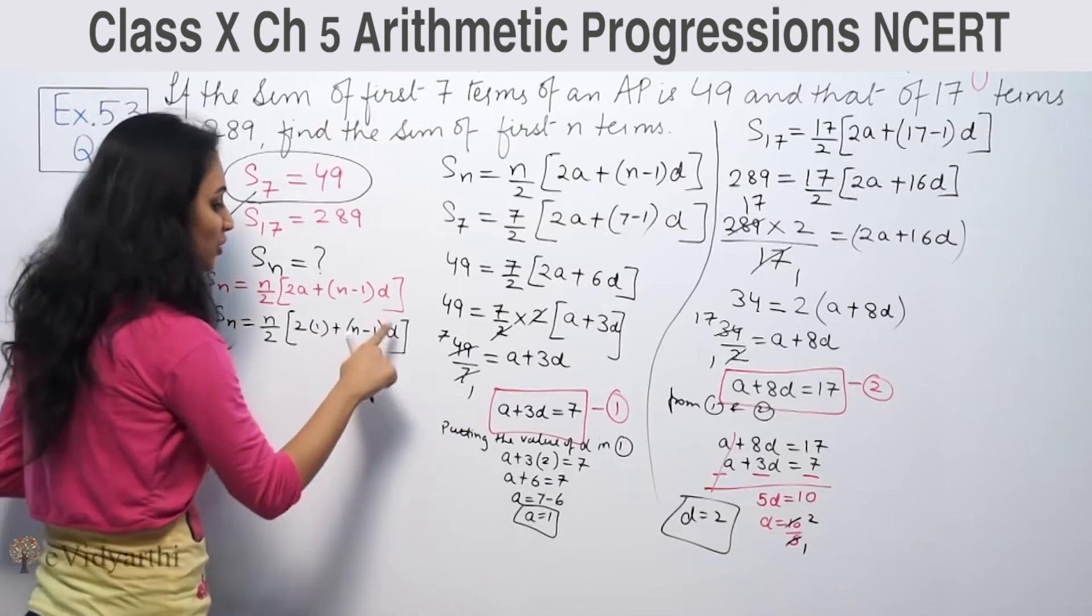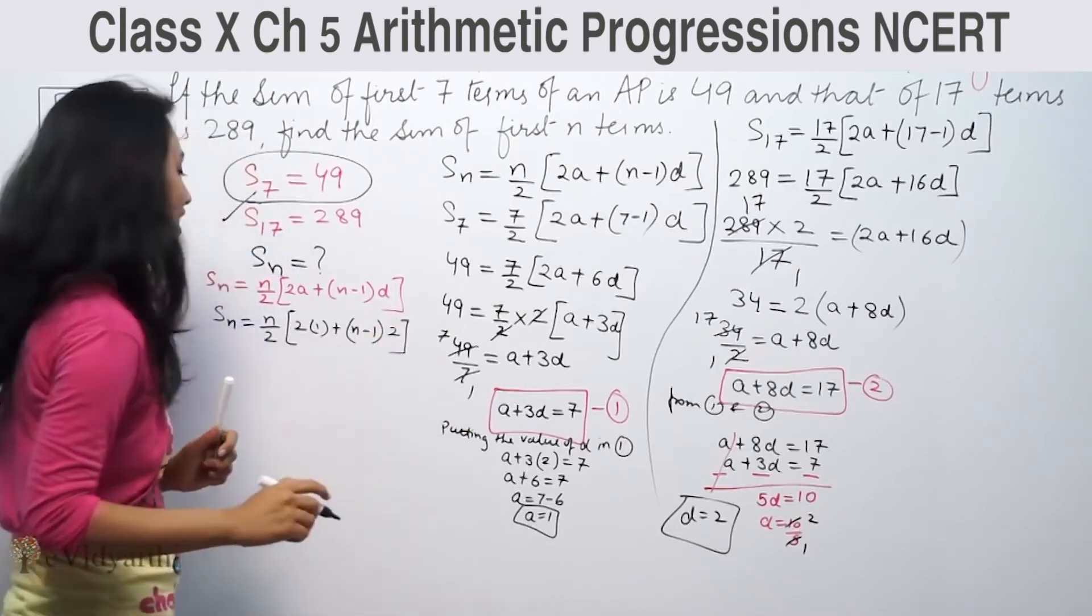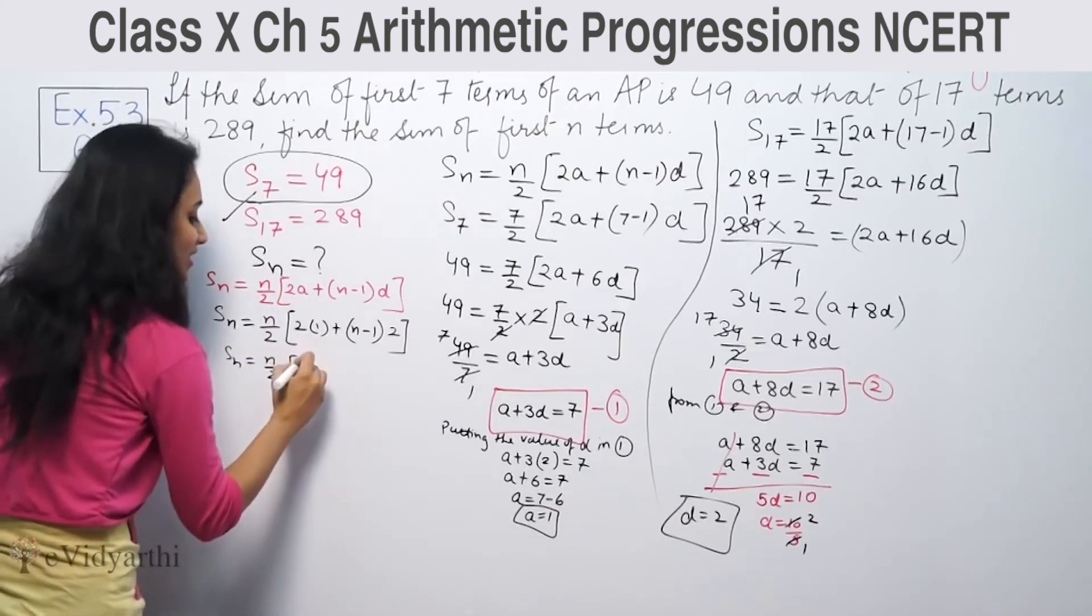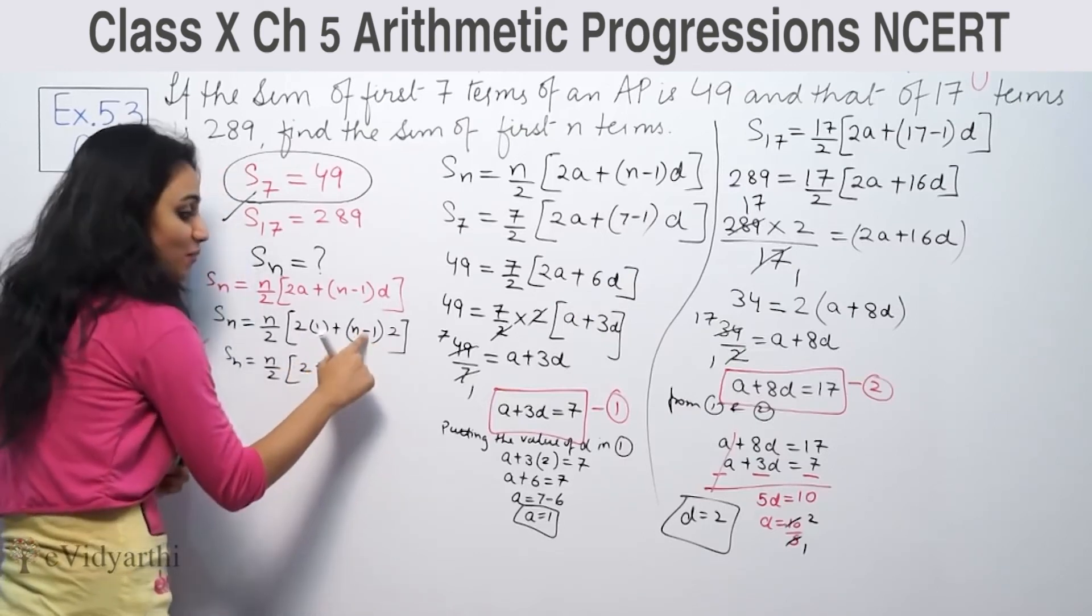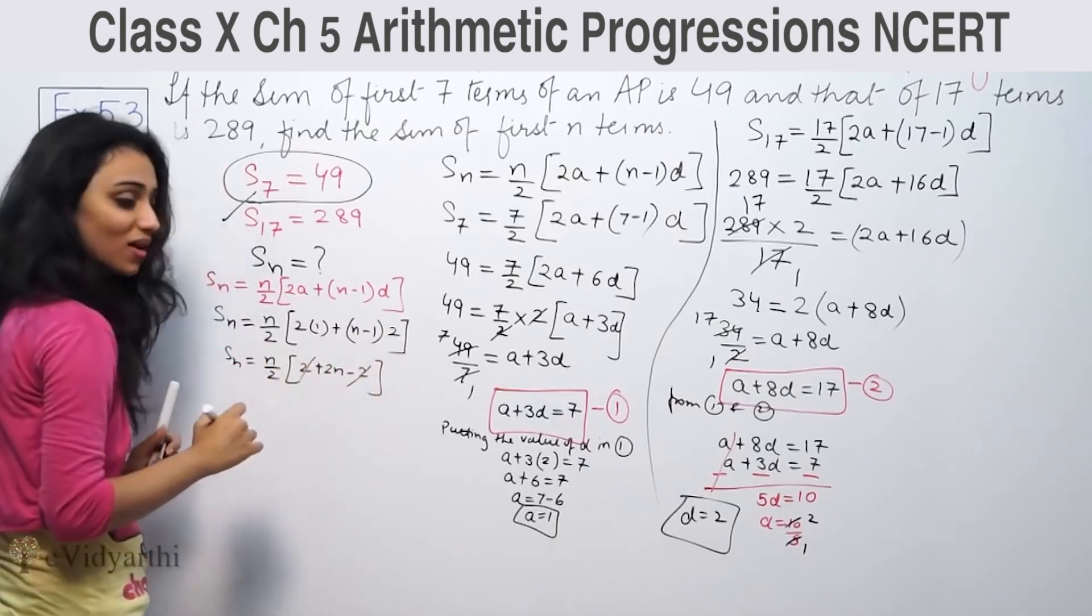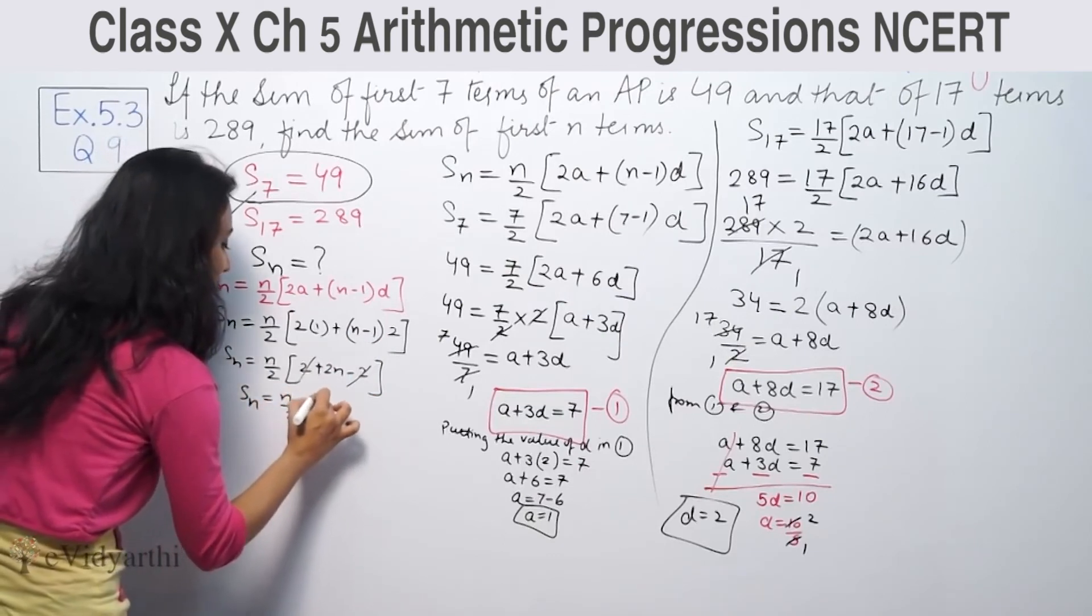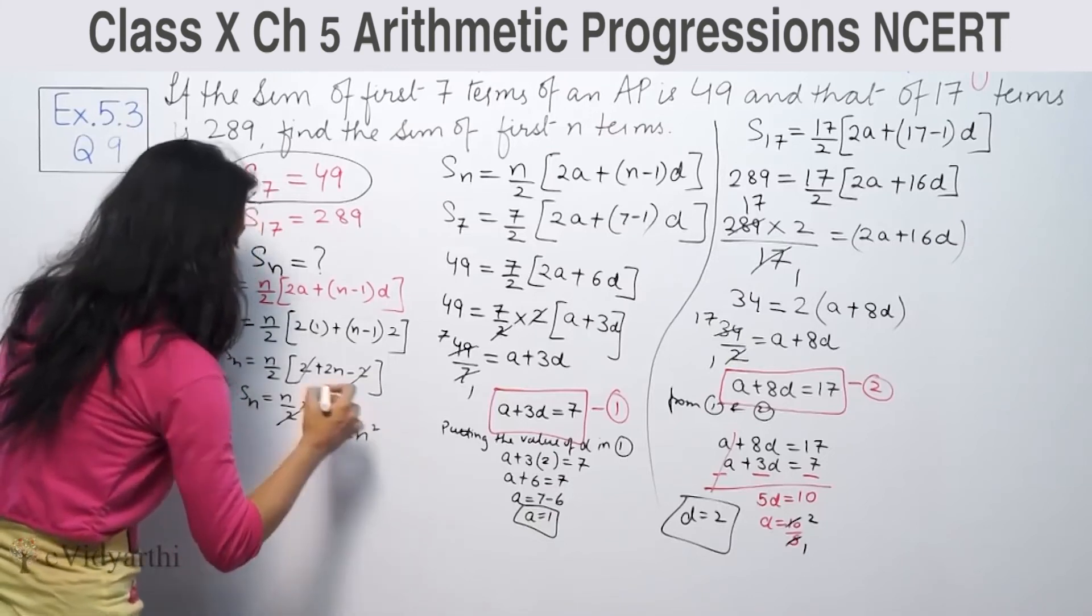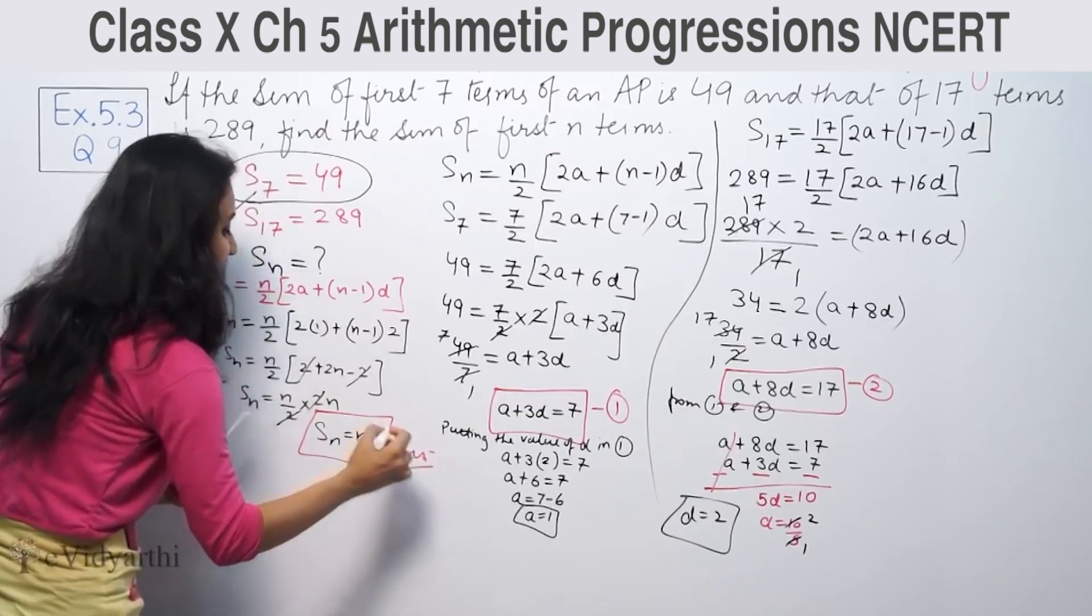Sn = n/2[2 + 2(n-1)]. This becomes n/2[2 + 2n - 2]. After canceling 2, Sn = n/2(2n) = n². So sum of n terms is n square. This is the answer.